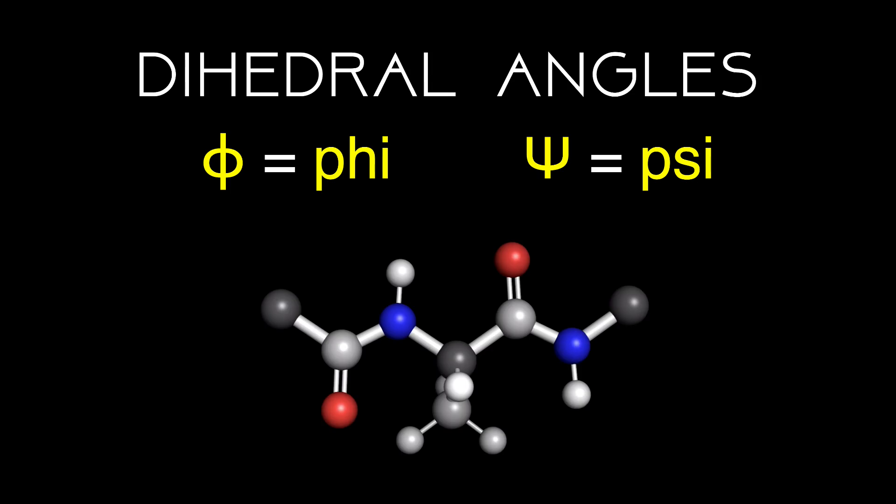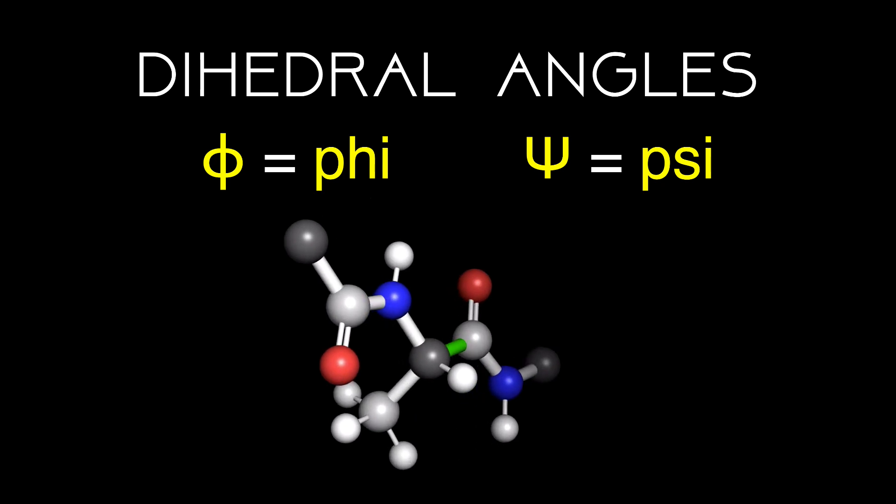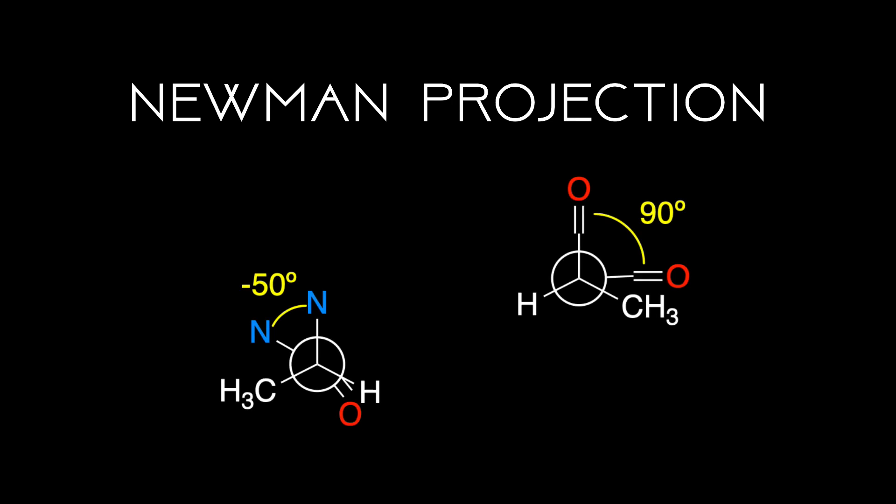In this tutorial, we'll define the phi and psi angles of an amino acid, use a 3D model to visualize them and see how they're measured. Finally, we'll learn how to translate what we see in the 3D model to a 2D Newman projection, which might sound familiar if you've taken an organic chemistry course.